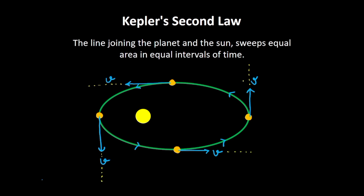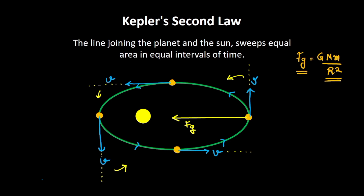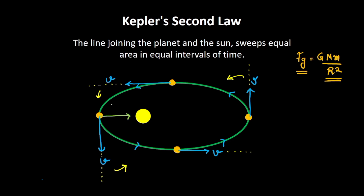The question arises: why is the planet bending towards the star? The answer lies in the fact that there is a force of attraction between the two — the force of gravity, Fg = GMm/R². Since gravity is inversely proportional to R, the distance between the two masses, the force of gravity is weaker when the planet is far from the star and stronger when it is close.